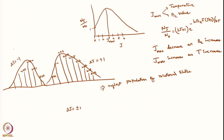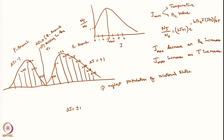The P branch corresponds to Δj = −1 and the R branch to Δj = +1. There is also something in the middle called the Q branch, where Δj = 0. However, this line is missing in the pure rotational spectrum because transitions like 0→0, 1→1, 2→2 are not allowed. So your rotational spectrum will look like the P and R branches only. We will stop here and continue in the next lecture.